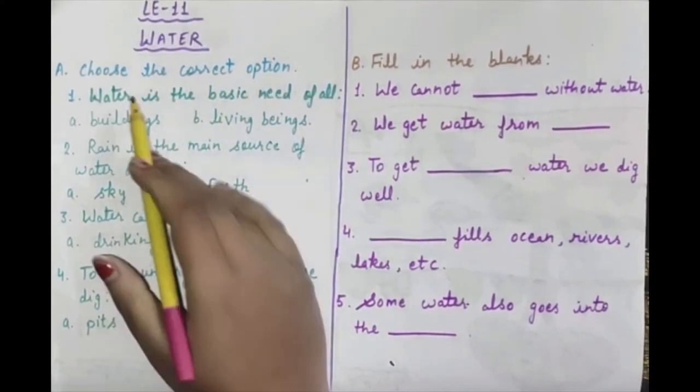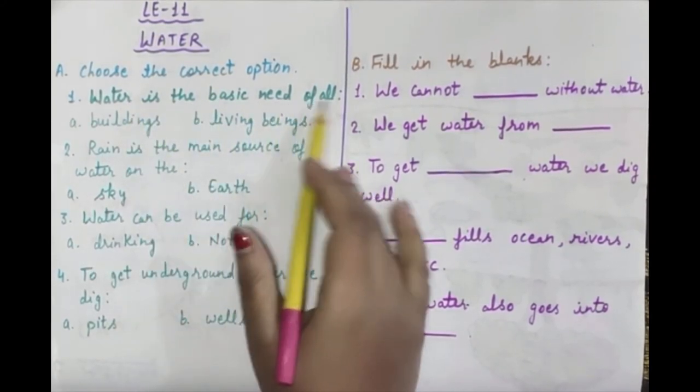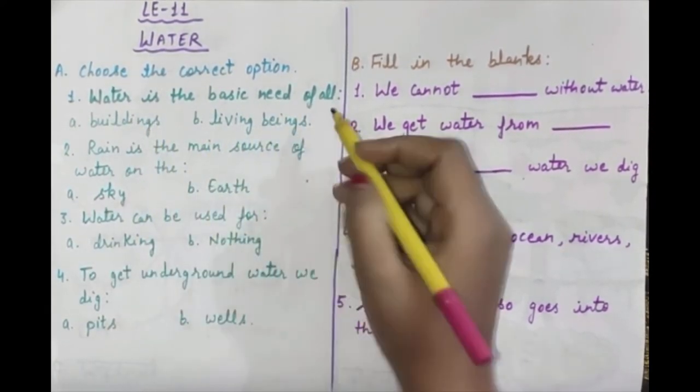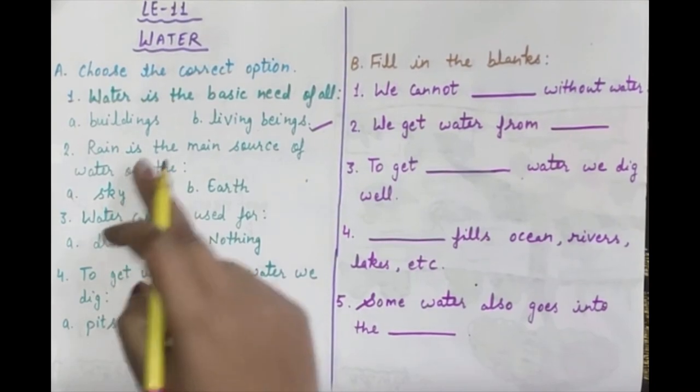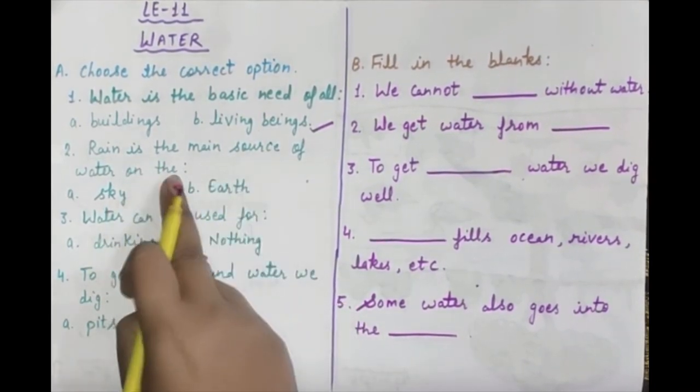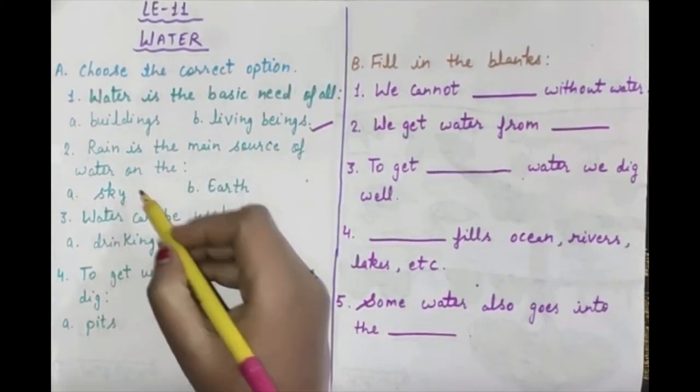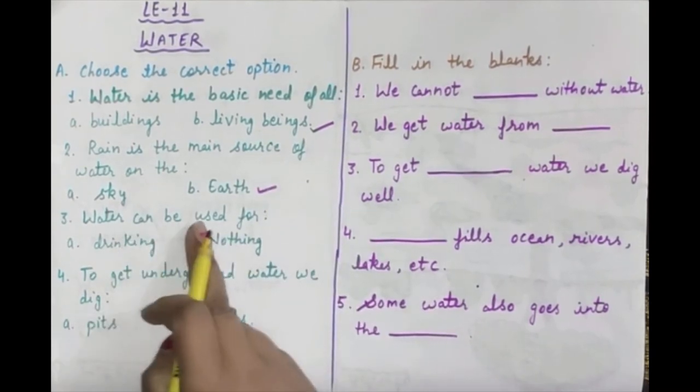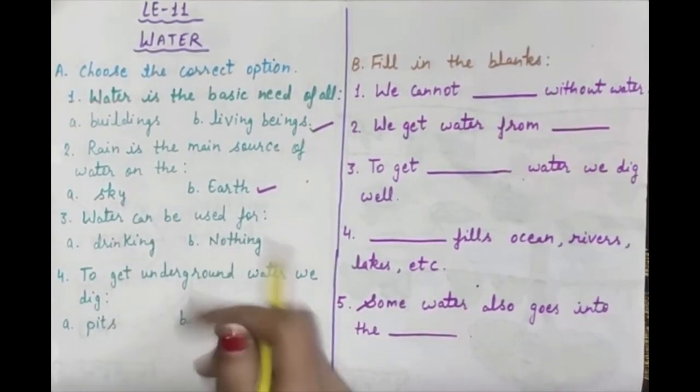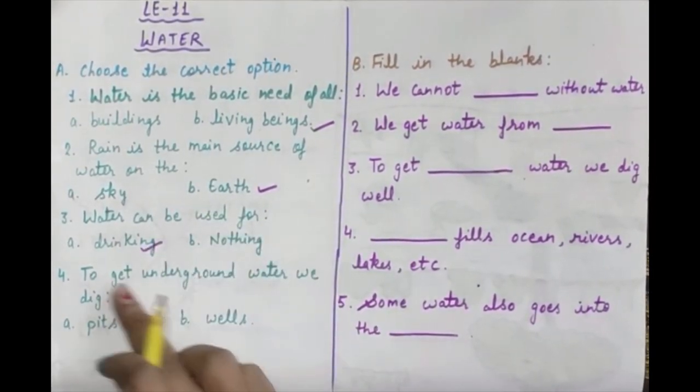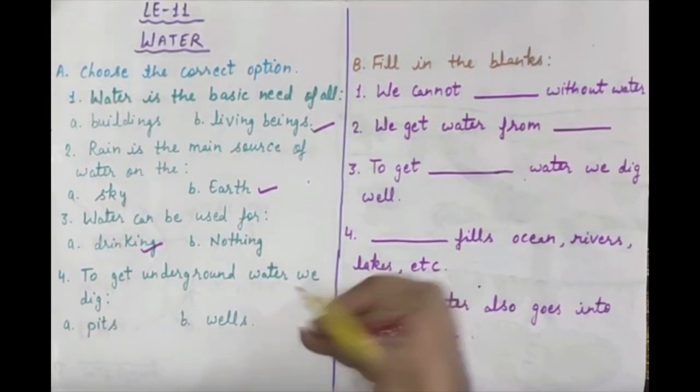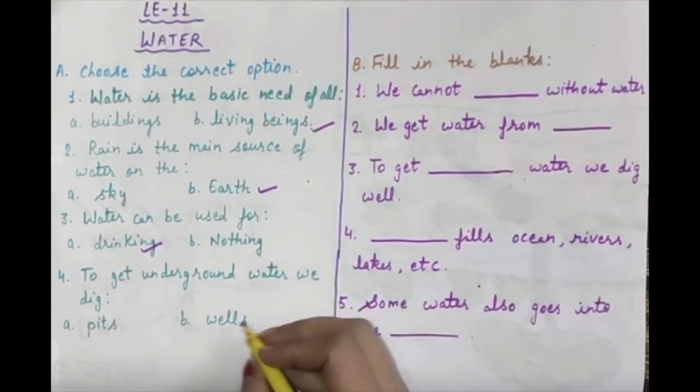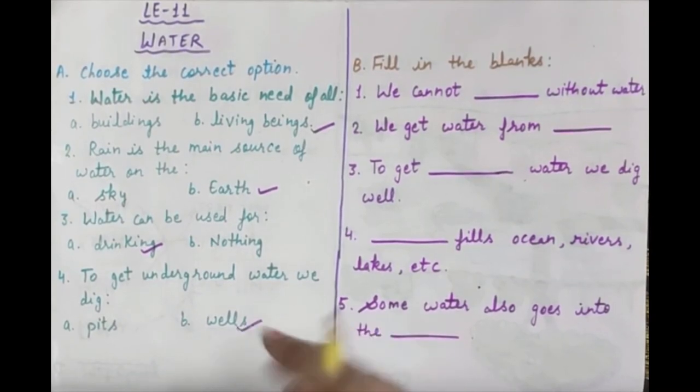Choose the correct option. Water is the basic need of all - buildings or living beings? Living beings. Rain is the main source of water on earth. Water can be used for drinking or nothing? Drinking. To get underground water, we dig wells.